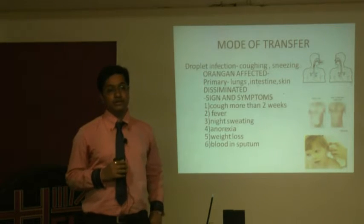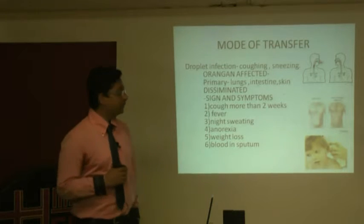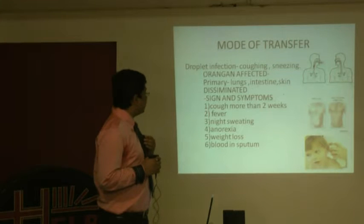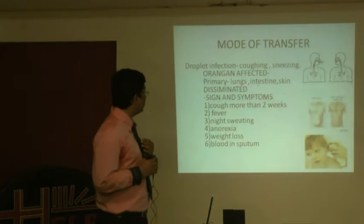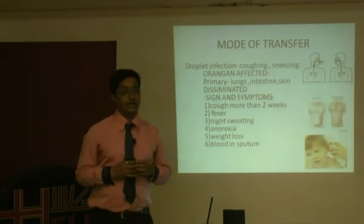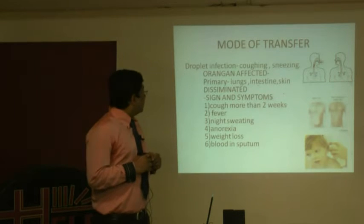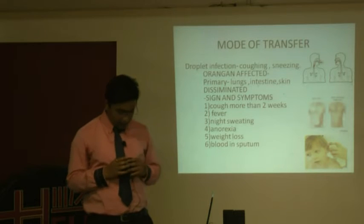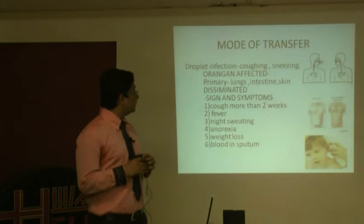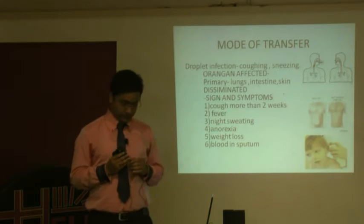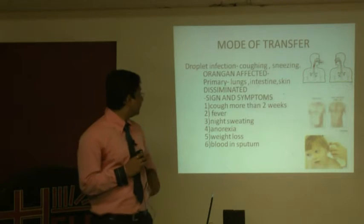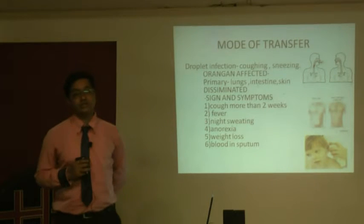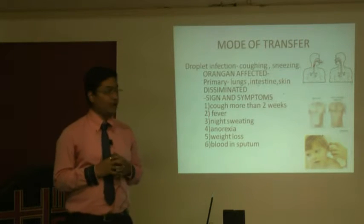Active tuberculosis refers to a person having sputum-positive tuberculosis. The source of infection is the patient, and transmission occurs via droplets released while sneezing, coughing, singing, etc. The lungs are primarily the most commonly affected organ, then the intestine and skin. There is also something called disseminated tuberculosis, which refers to secondary organs being affected.